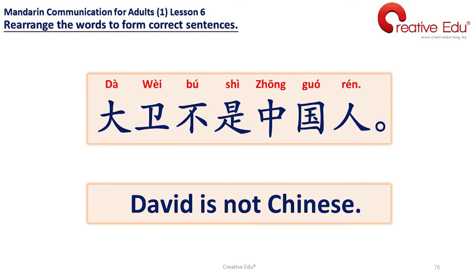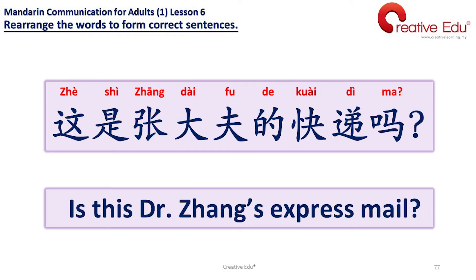Number 3: 大卫不是中国人。David is not Chinese. 大卫不是中国人。Number 4: 这是张大夫的快递吗？Is this Dr. Zhang's express meal? 这是张大夫的快递吗？